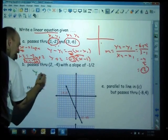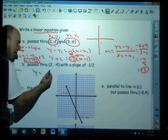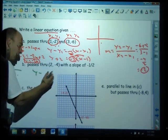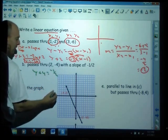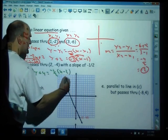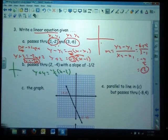So it's simply y minus y1 would be y minus negative 4 would be y plus 4 equals the slope. They gave it to me. Negative 1 half times x minus 2.